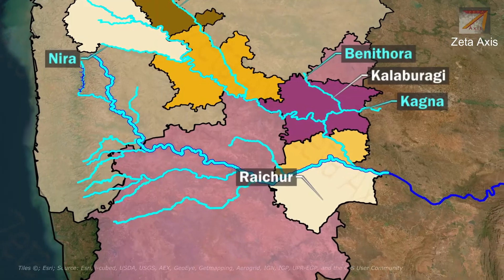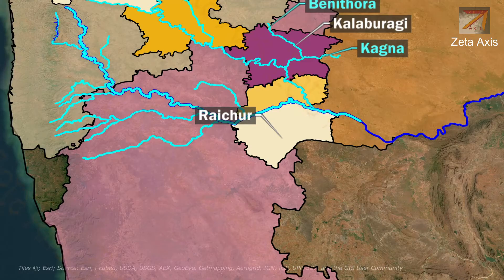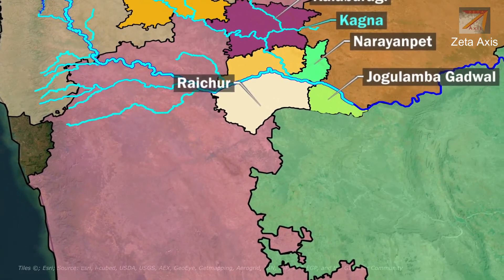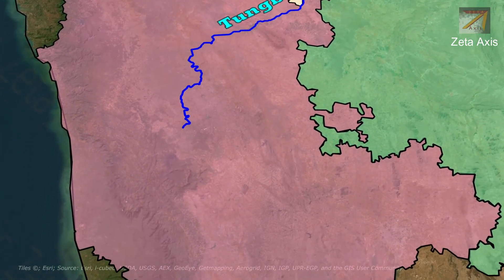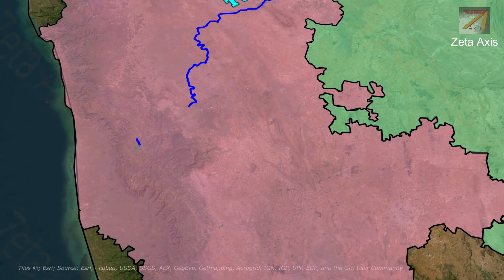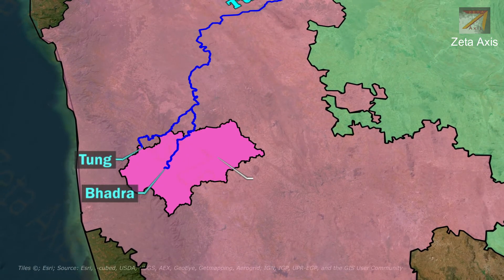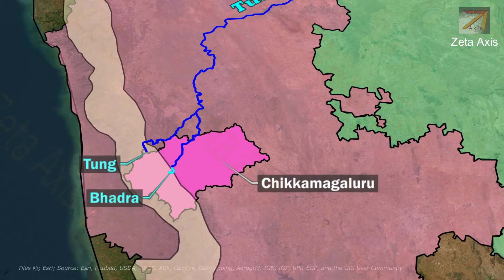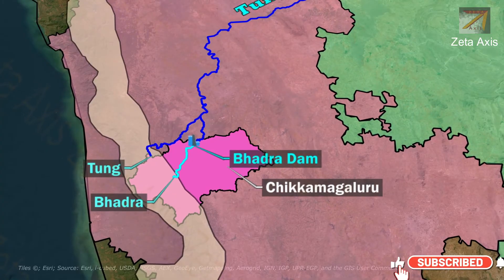After the confluence of the Bhima River, the Krishna River moves further into Telangana, entering in Narayanpet district. It then moves forward into Jogulamba Gadwal district where the Krishna River meets the Tungabhadra River. The Tungabhadra River is formed by the confluence of the Tunga River and the Bhadra River. Both rivers originate in Chikmagalur district of Karnataka on the Western Ghats. After emerging from the source, the Bhadra River flows through the Kudremukh mountain region, and Bhadra Dam is built on it in Chikmagalur district.